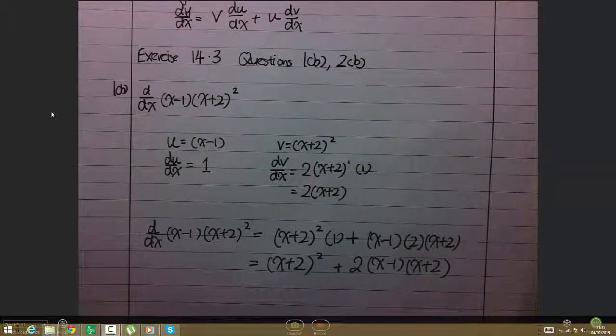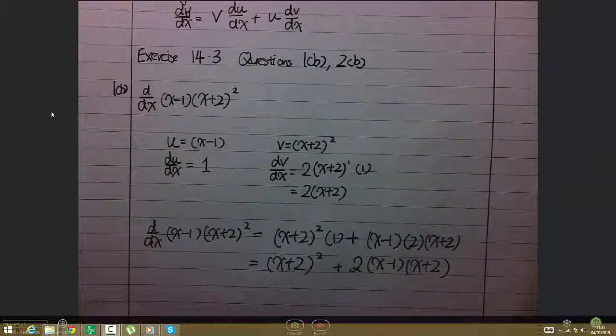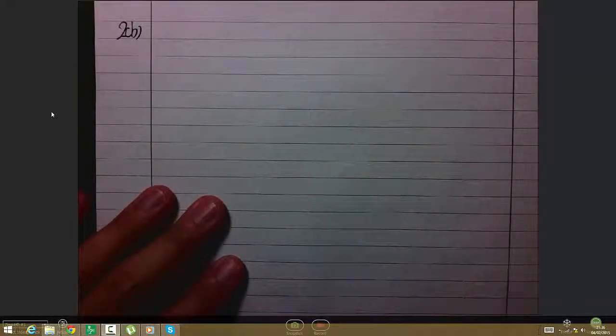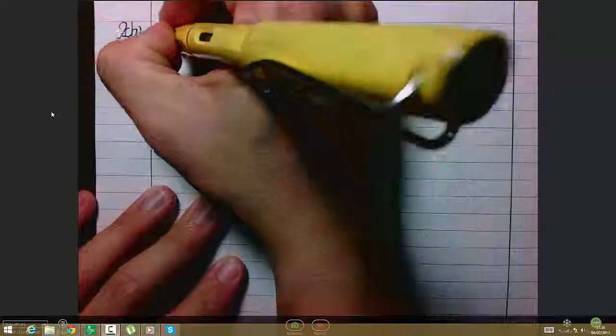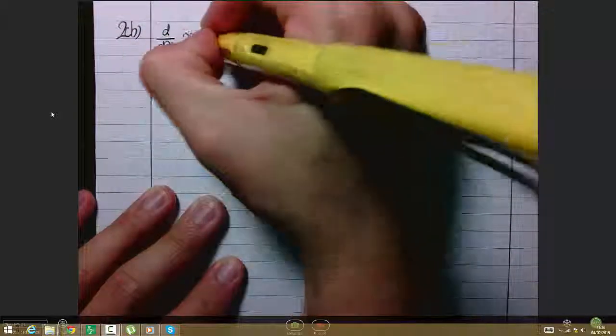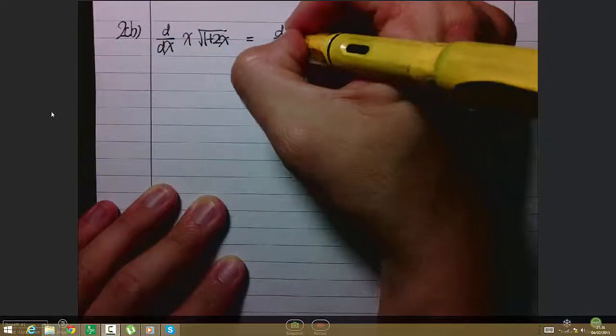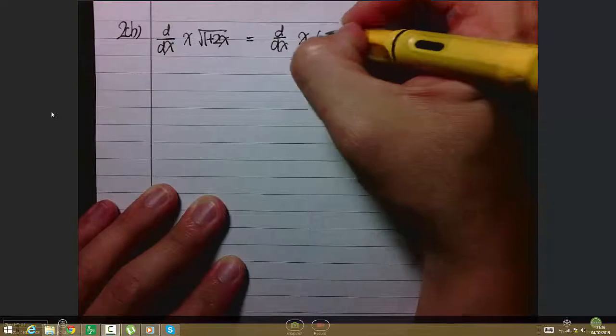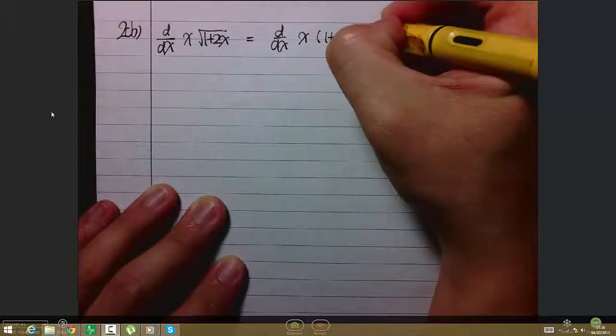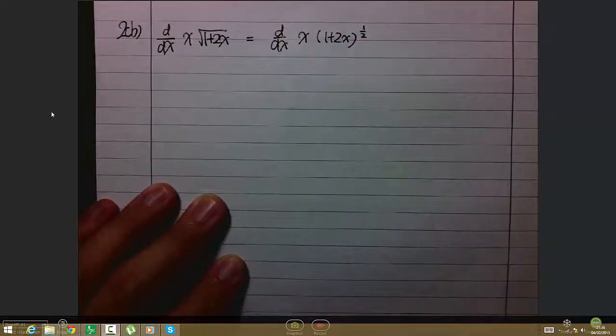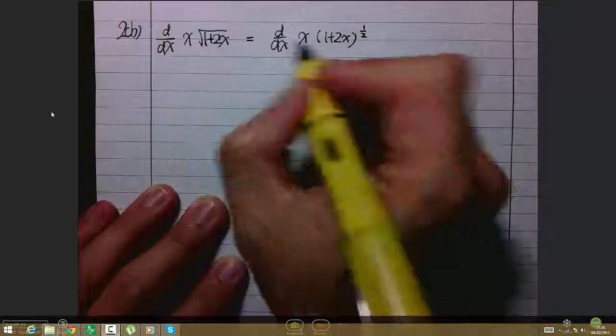Now I move on to question 2b. Differentiate x times square root of (1+2x). This is the same as differentiating x times (1+2x)^(1/2). Now we identify u and v.